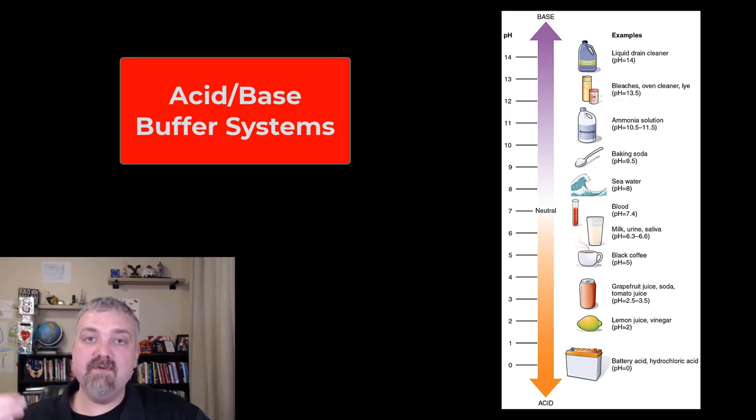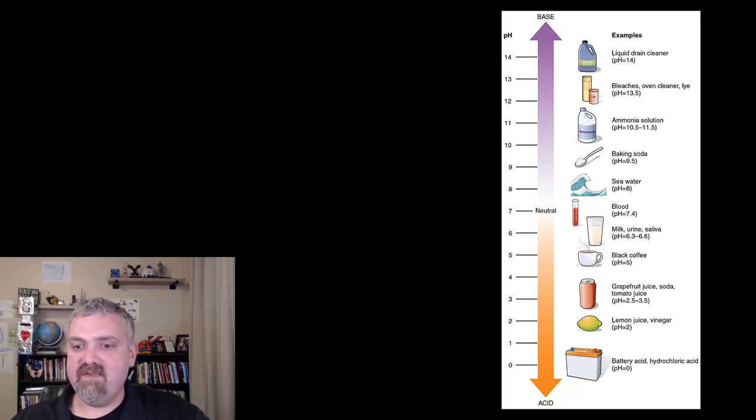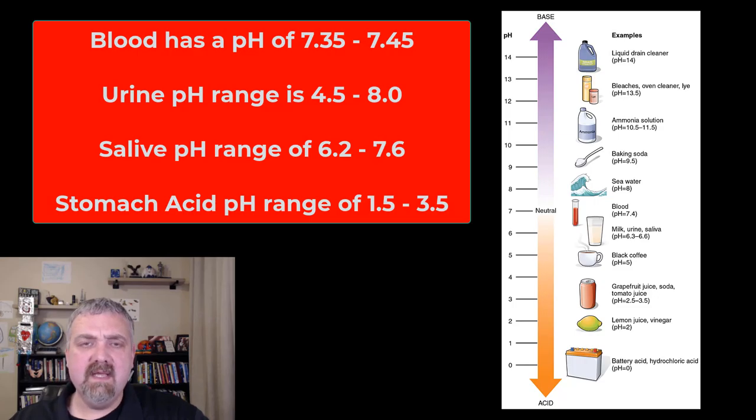Here you see the pH scale. It runs from 0 to 14. This is covered in unit 1, but pH of 7 is neutral, pure water. Anything above a pH of 7 would be a base, anything below a pH of 7 would be an acid. Looking at body fluids, you see blood has a pH of 7.4. I usually say 7.35 to 7.45. Urine and saliva puts the pH at 6.3 to 6.6, but those are variable.